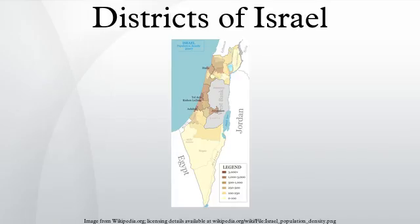Jerusalem district: population 1,840,000; district capital: Jerusalem.